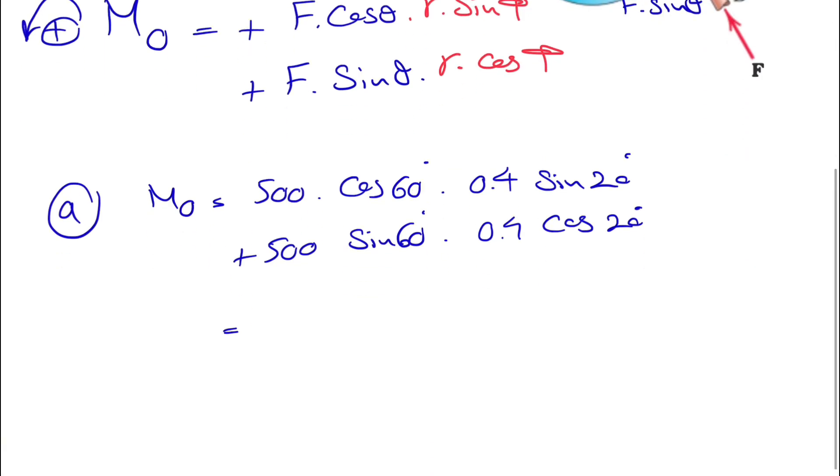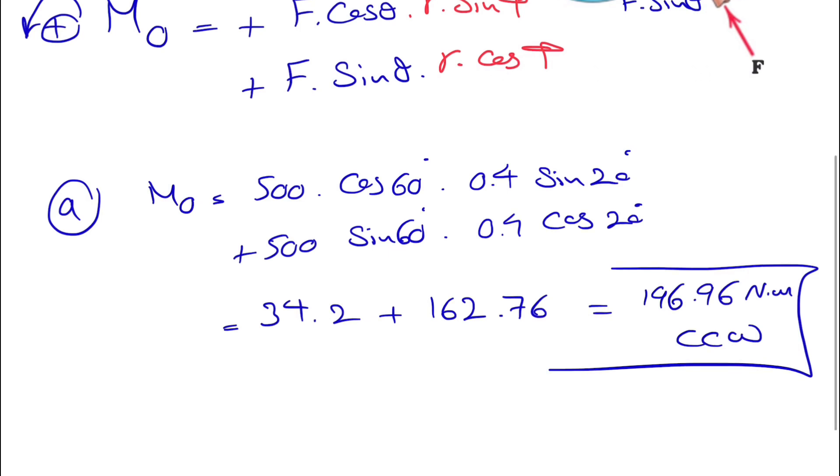So if you calculate this from the first part we get 34.2 plus 162.76, and that's going to give us 196.96 newton meters, and positive sign shows that the moment is counterclockwise.